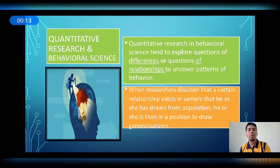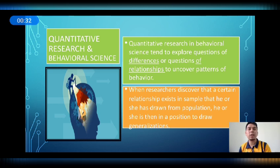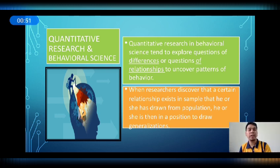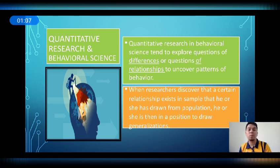Quantitative research and behavioral science. Quantitative research in behavioral science tends to explore questions of differences or relationships to uncover patterns of behavior. For example, a person with a high level of verbal aggression tends to be physically aggressive — is there a relationship between verbal aggressiveness and physical aggressiveness? Another example: adolescents with disabilities and people with mental retardation are vulnerable to economic, psychological, and physical abuse. When researchers discover a certain relationship exists in samples drawn from a population, they are in a position to draw generalizations.